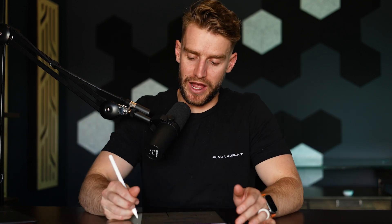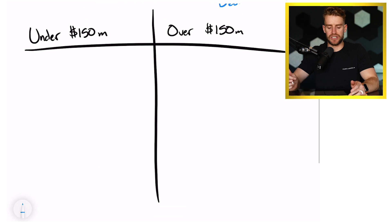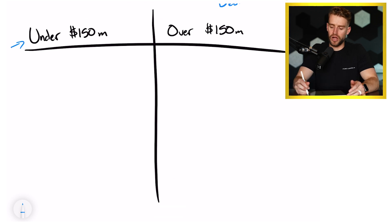I've founded three investment funds and we've seen a bunch of other founders inside of Fund Launch. Literally 120 funds launched out of our group last year. Now this goes across the board for any fund - private equity, venture, real estate, debt. The key consideration is: are you under or over $150 million? That's AUM, assets under management.